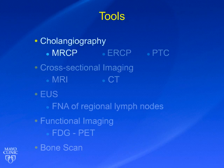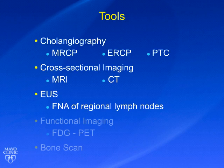The diagnostic tools are MRCP, ERCP, percutaneous transhepatic cholangiograms, cross-sectional imaging, EUS with fine-needle aspirate of regional lymph nodes, functional imaging with PET, and bone metastases evaluation by technetium scans. I'll quickly run through how we employ them.